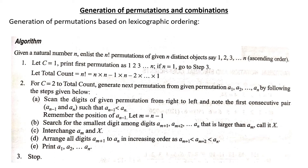Lexicographic ordering is like storing words in a dictionary in alphabetical order. The algorithm says: given a natural number n, list the n factorial permutations of n distinct objects, say 1, 2, 3, and so on, in ascending order. Let C equal 1 and print the first permutation as 1, 2, 3, and so on. If n equals 1, then go to step 3 and stop.